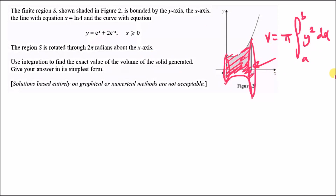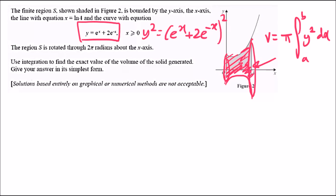If you recognize this formula and it says rotate about the x-axis, you use this. Replace y² with the equation squared. Since y = e^x + 2e^(-x), y² is that equation squared. Now expand it like a quadratic using the double bracket method. So the volume is π times the integral from 0 to ln(4) of the expansion.